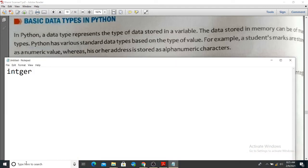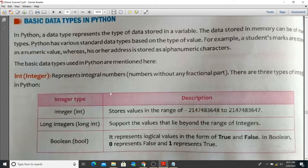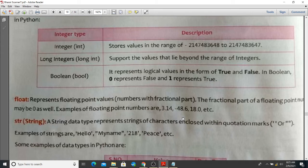Integer data type represents integral numbers, numbers without any fractional part. There are three types of integers in Python. Now you have to note all this, so you have to be careful that integer is a data type. Float is a kind of data type which is a fractional part, which is a decimal part. So representing floating point values, numbers with a fractional part. The fractional part of a floating point number may be zero as well. Example of floating point number is 3.14, minus 48.6, that is called a float kind of data type.